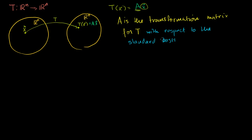I never said this before, because the only coordinate system we were dealing with was the standard coordinate system. But now we know that there are multiple coordinate systems, multiple ways to represent these vectors, because Rn has multiple bases. Each of those bases can generate a coordinate system where you can represent any vector in Rn with coordinates with respect to any of those bases.